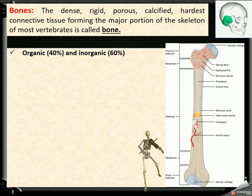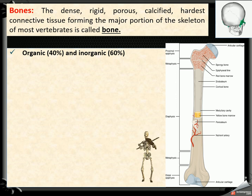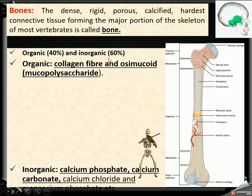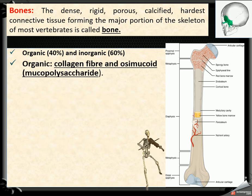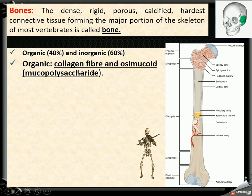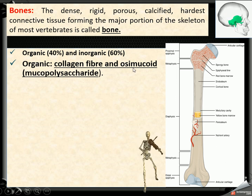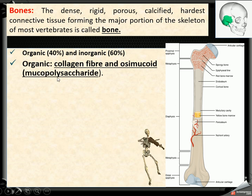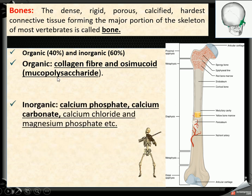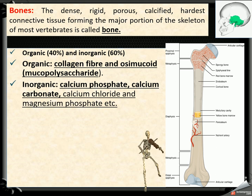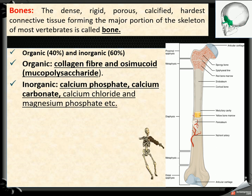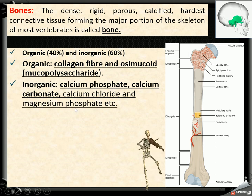The bone consists of 40% organic matter and 60% inorganic matter. The organic matter contains collagen fiber and osseo-muconate, also called mucopolysaccharide. The inorganic matter contains calcium phosphate, calcium carbonate, calcium chloride, and magnesium phosphate.